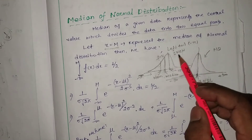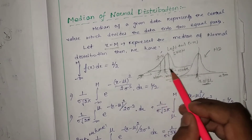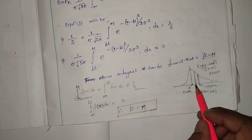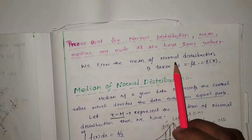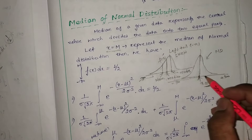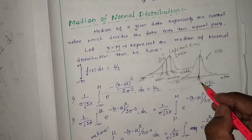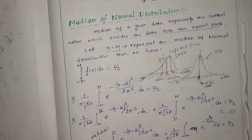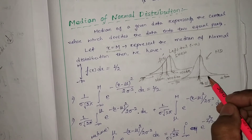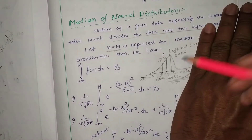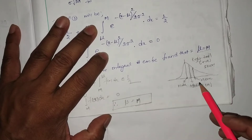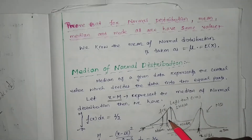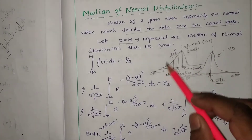Now consider the left-skewed distribution, where mean, median, and mode are in that order — median is greater than the mean. For a right-skewed distribution, mean is greater than the median. We need to consider these two distributions to prove that median equals mean for the normal distribution. For skewed distributions, mean, median, and mode do not coincide with each other.